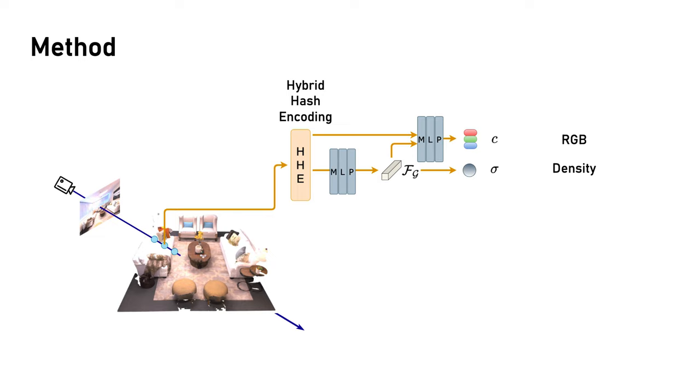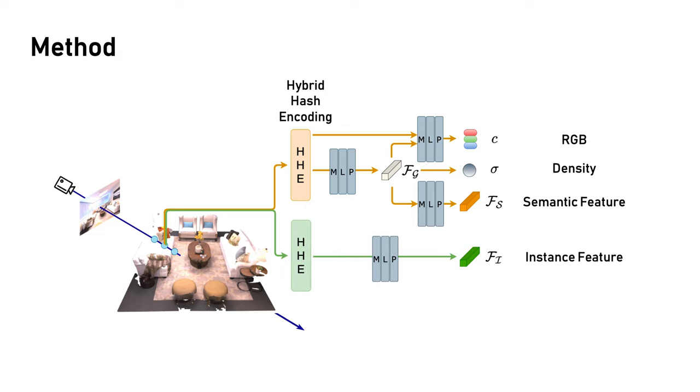Specifically, given a 3D position and a viewing direction, PVLFF encodes a 3D volume of color and density to model a radiance field of the scene. We stack a lightweight multi-layer perceptron to predict semantic feature field for the 3D space. In addition, we parameterize the instance feature field on a different branch. We empirically find that this setting largely increases the quality of instance features and improves the system robustness.